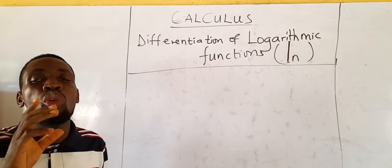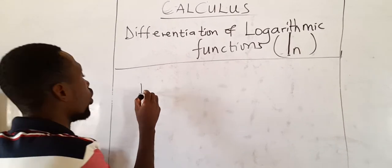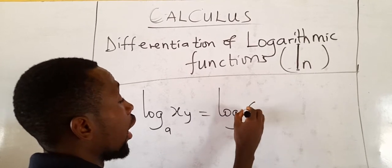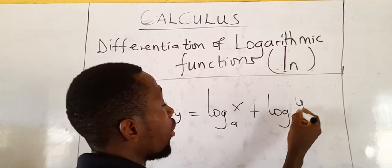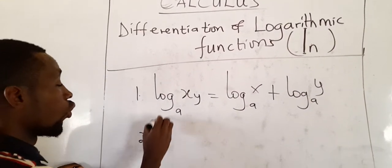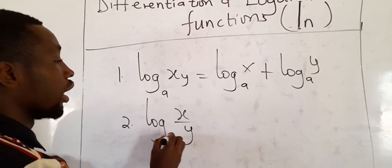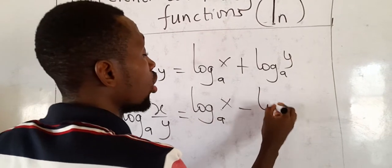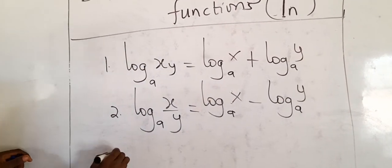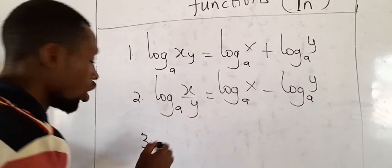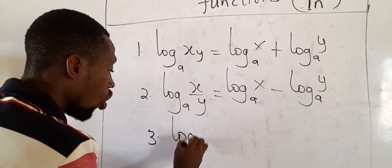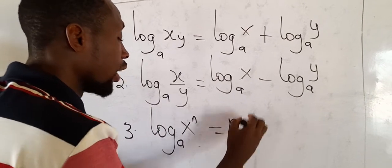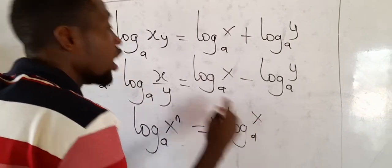I know you remember these laws. First: log_b(xy) = log_b(x) + log_b(y). Second: log_b(x/y) = log_b(x) − log_b(y). Third — which I know you'll be comfortable with by now — log_b(x^n) = n·log_b(x). I know you can prove all these things.